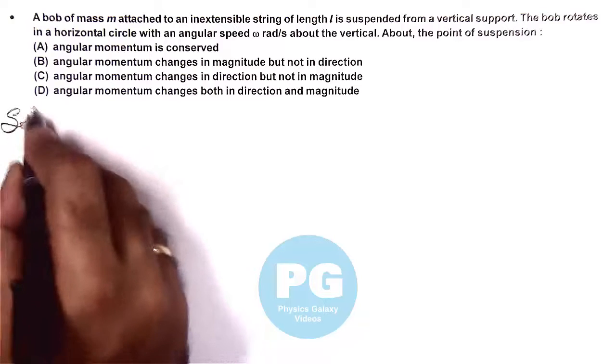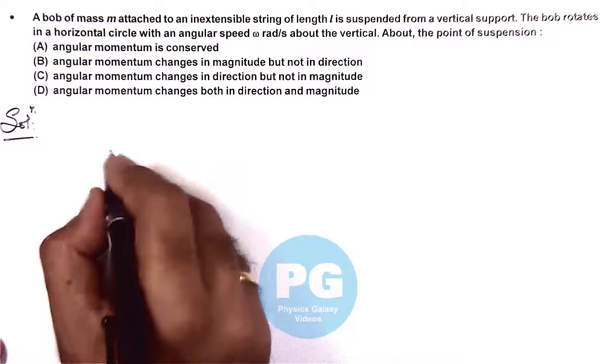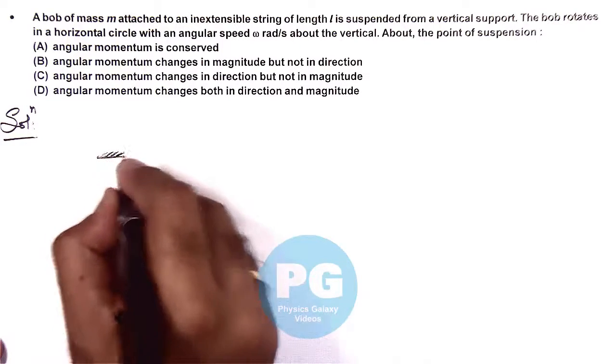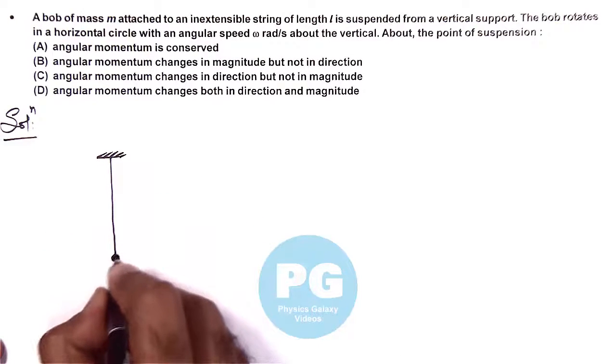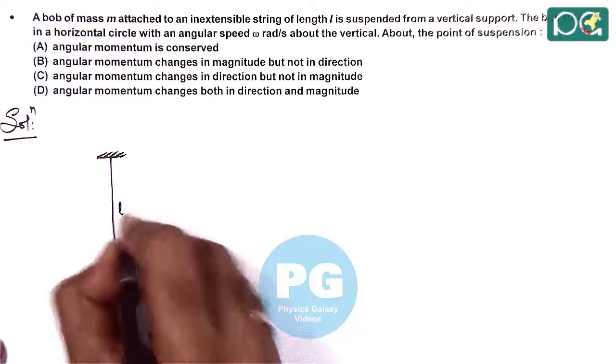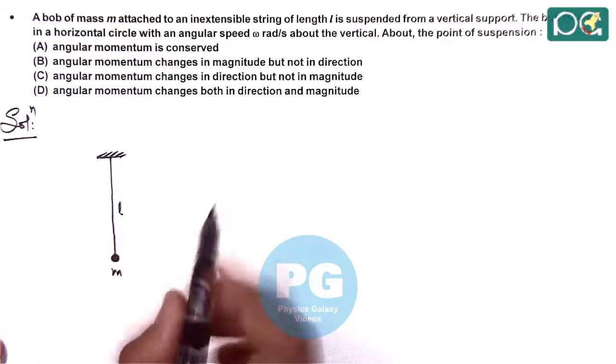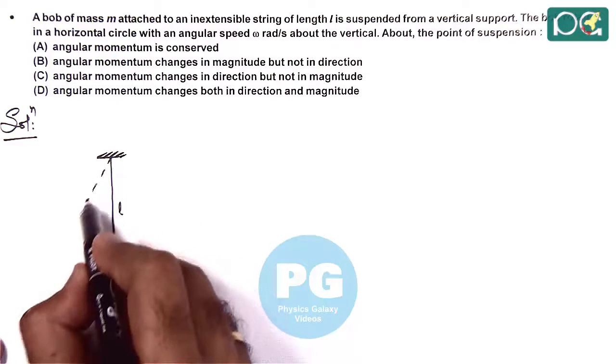So if we visualize the situation, here this is the case from a point. A bob of mass M is suspended with a string of length L, and it rotates in a horizontal circle like this.